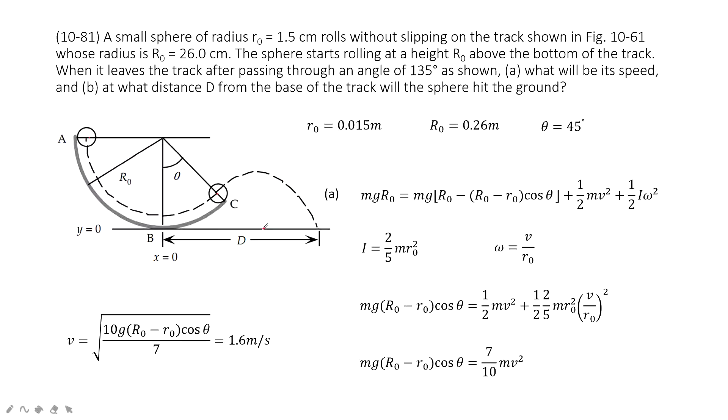So what quantity is given? The radius of object is given, and this R, capital R from A to C is given. Angle theta is given. Theta is 45 degrees.